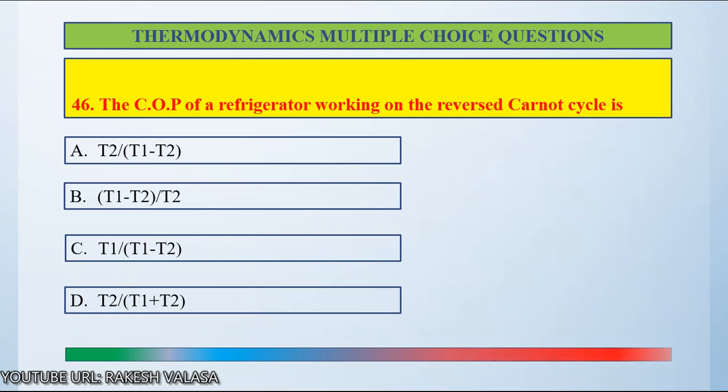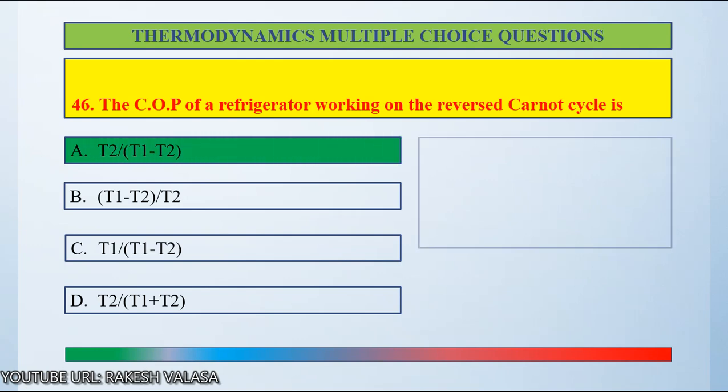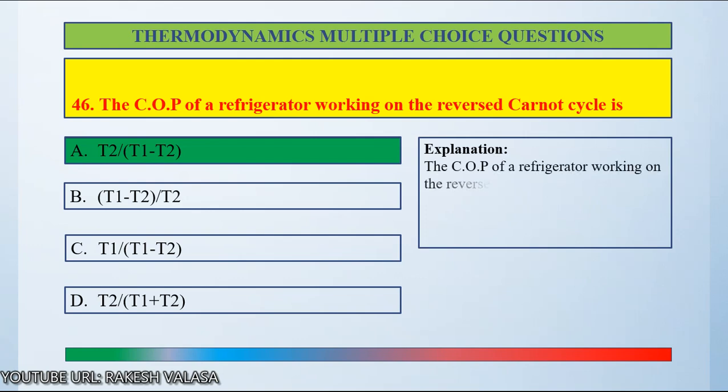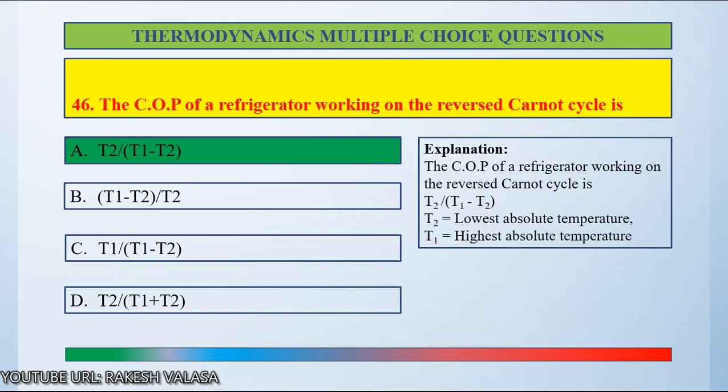The answer is T2 by T1 minus T2. Let T1 be the highest absolute temperature and T2 be the lowest absolute temperature. The COP of a refrigerator working on the reverse Carnot cycle equals the lowest absolute temperature divided by the highest absolute temperature minus the lowest absolute temperature — that is, T2 by T1 minus T2. So the answer is option A.